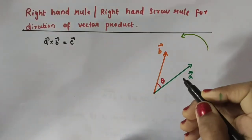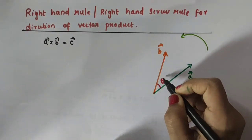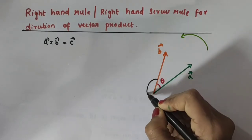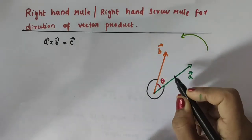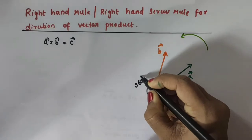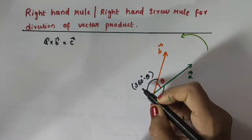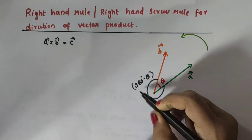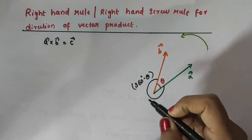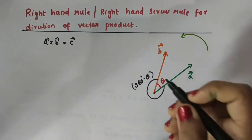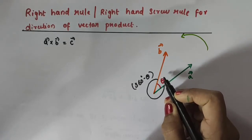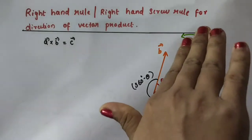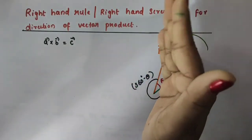When considering two vectors A and B, there are actually two angles between them. One is theta, as marked, and the other angle is 360 degrees minus theta — because angles around a point add up to 360 degrees. When applying the right hand rule or right hand screw rule for the vector product, the rotation should be taken through the smaller angle, which is less than 180 degrees. So here the smaller angle is theta, and we curl our fingers through that small angle — not in the clockwise direction, but in the anti-clockwise direction.